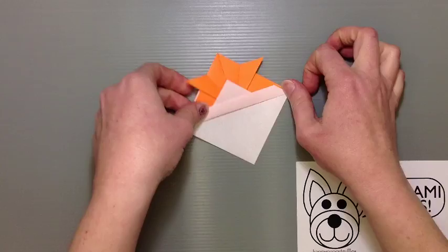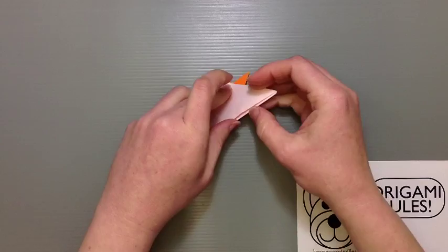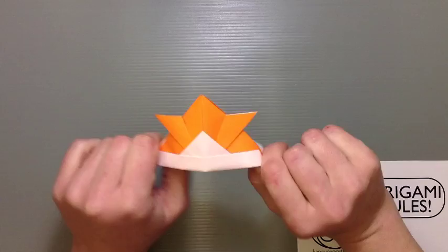Flip it over. We're going to fold that back flap all the way up to the top too. Now this is the exact same steps for the samurai helmet. If you look here you can just pop it open and have a little helmet there. But we're making a fish.